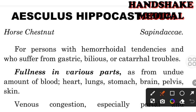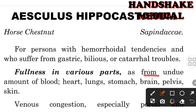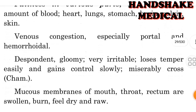One important physical general symptom is fullness in various parts, as from an undue amount of blood — a sensation of fullness in various parts of the body, as if an excess amount of blood has accumulated there. This fullness sensation is felt in the heart, lungs, stomach, brain, pelvis, and skin.